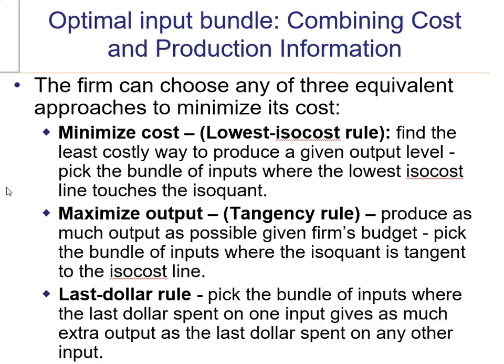The first approach is minimizing cost by choosing the lowest isocost rule. In words, this is the least costly way to produce a given level of output: pick the bundle of inputs where you have the lowest isocost line. The lowest isocost line would be the one tangent to the isoquant.